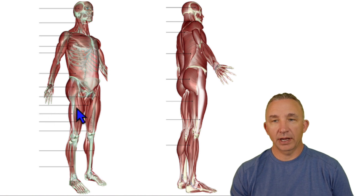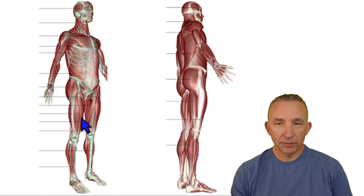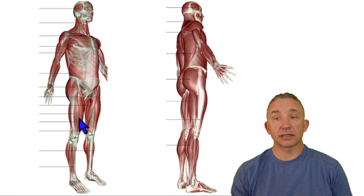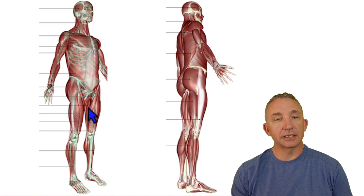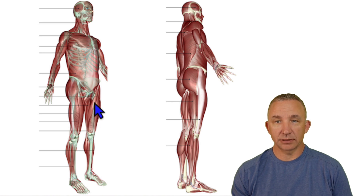Coming across here, this is sartorius — sartorius is the longest muscle in the body. Wrapping over here, one of our quads is vastus lateralis. Vastus lateralis also has vastus medialis and rectus femoris as fellow quad muscles. Coming back up, one of my adductor muscles is gracilis, which is the most medial muscle of the thigh. So sartorius is the longest muscle, and we have vastus lateralis and vastus medialis.